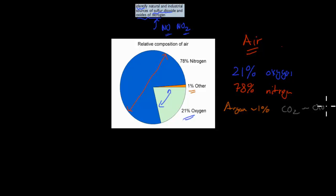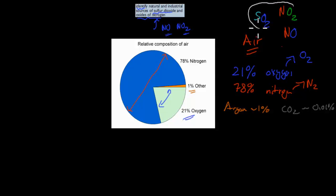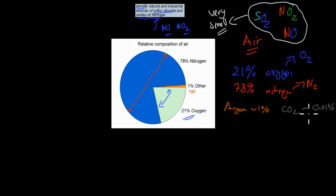The usual form oxygen comes in is O2, and the usual form nitrogen comes in is N2. We don't usually see much that is naturally found as NO — nitrogen monoxide — or NO2 — nitrogen dioxide. Sulfur dioxide is also only a tiny bit naturally in our environment. These gases we're discussing make up a very small, normally very small amount — much smaller than 0.01%. The vast majority is oxygen as O2 and nitrogen as N2.